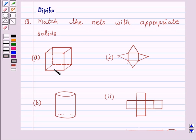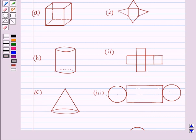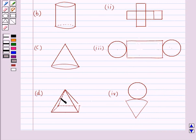Now this is solid A and net 1, part B and net second. Now this is solid C and the net third and this is solid D and net four.